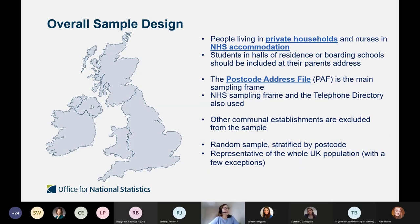The overall sample design covers people living in private households as well as nurses living in NHS accommodation. We also cover students, but not in halls of residence — they're covered at their parents' address. The sampling frame we use is the postcode address file, as well as an NHS accommodation sampling frame specifically produced for this survey. We also use the telephone directory to match telephone numbers to addresses north of the Caledonian Canal. Other communal establishments are excluded from the sample.